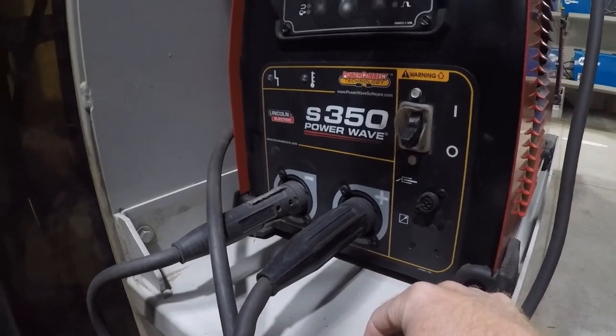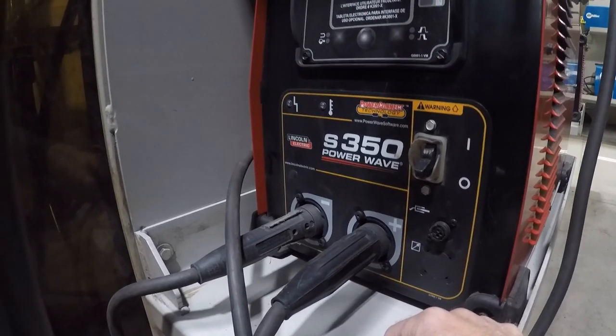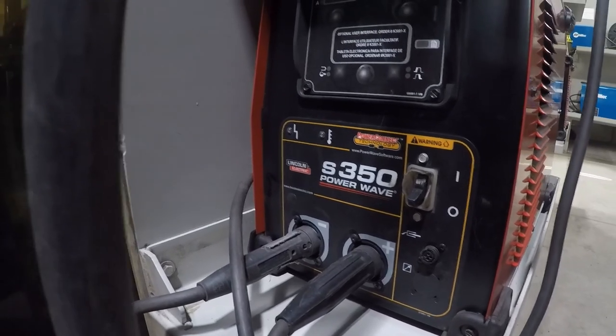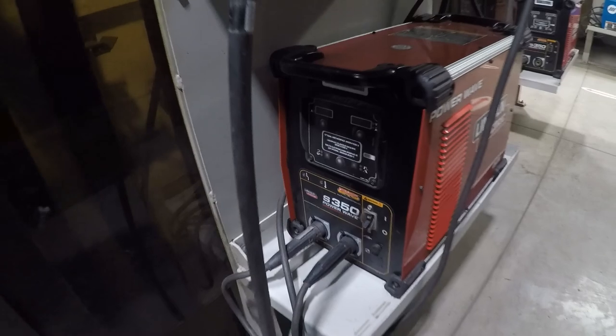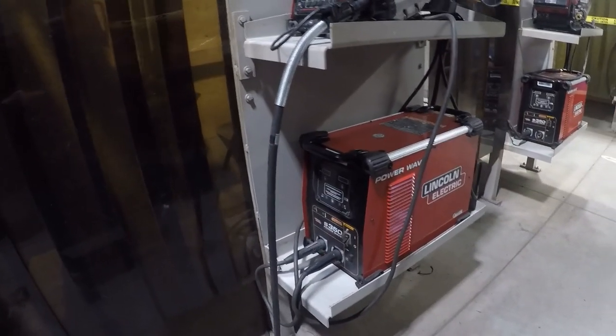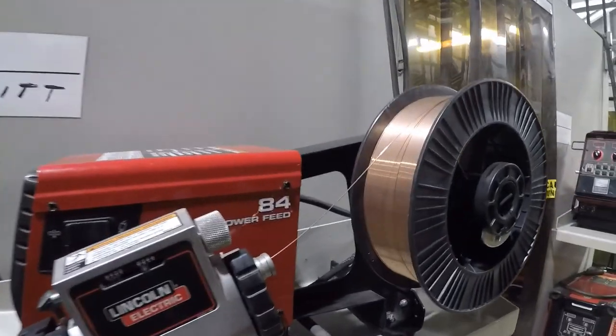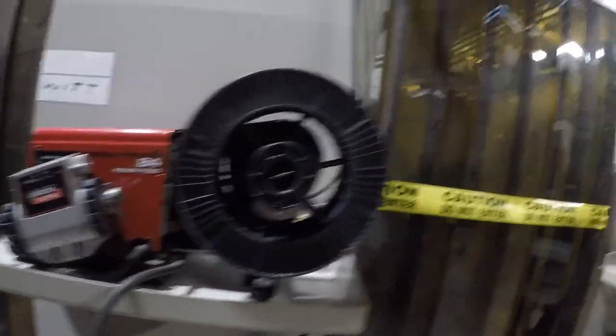If you're doing thin sheet metal with the stick welding, it generally runs a little bit better on the negative because of less penetration. Some welding wires with the MIG run either, you're able to reverse the negative and the positive. And some wires like this one here, the S6, only runs on the positive so you cannot reverse that for less penetration.